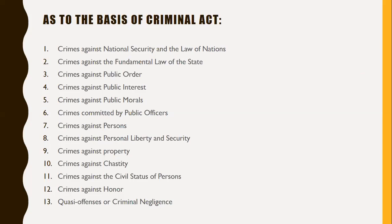Crimes committed by public officers include bribery, corruption, and malversation of public funds or property. Crimes against persons include parricide, murder, homicide, physical injuries, infanticide, and abortion. Crimes against personal liberty and security include kidnapping and illegal detention. Crimes against security include abandonment of helpless persons, exploitation of minors, trespass to dwelling, threats, and coercion.